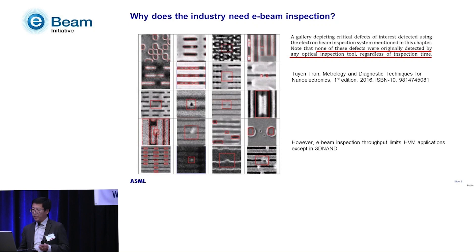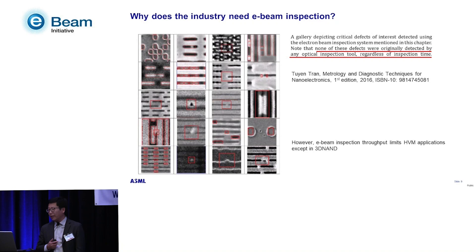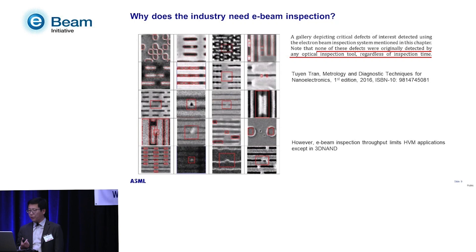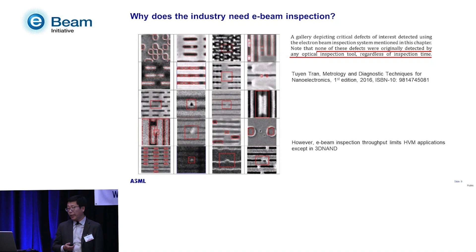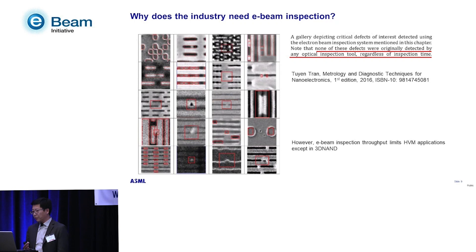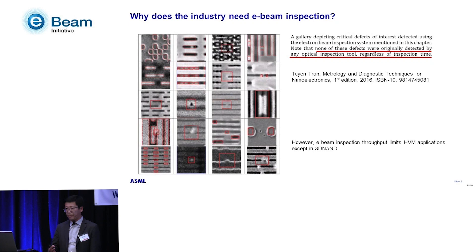This is a picture I took from Intel Fellow Dr. Tuwin Tran, who is responsible for inspection at Intel. If you remember one slide from my talk, I'd like it to be this one. He showed a gallery of defects from 2016, and for all these defects, e-beam was the only viable solution — any optical inspection tool, regardless of inspection time, was actually not able to see these defects. As the shrink continues, the need for e-beam with better resolution and sensitivity continues, though e-beam is typically slow relative to optical solutions, which limits its HVM application except in 3D NAND where large pixel sizes work for some voltage contrast applications.